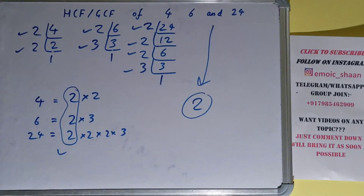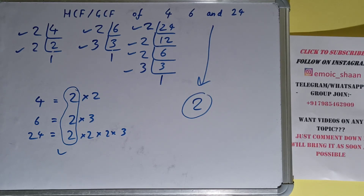So we can say that the HCF or the GCF of the numbers 4, 6, and 24 is 2. So this was all. If you found the video helpful, please do hit the like button, consider subscribing, and thanks for watching.